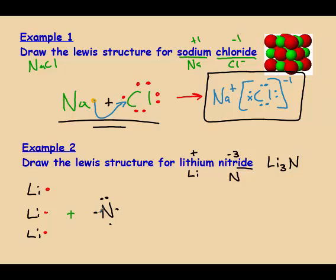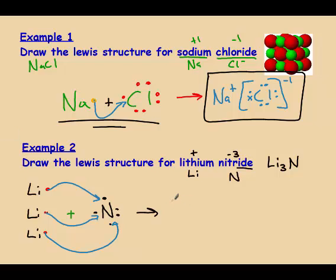One lithium electron goes to one side of nitrogen, one to another side, and one to another side to fill up nitrogen. If we didn't have three lithiums, nitrogen wouldn't have eight valence electrons — and that's the whole reason they're bonding. So to draw this, I have my three lithiums and my one nitrogen, and nitrogen should have a negative three charge.